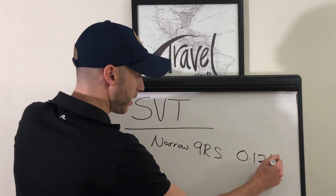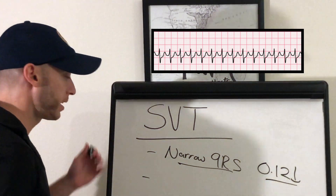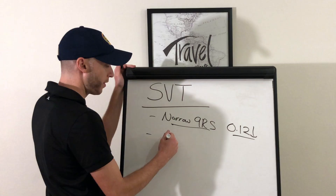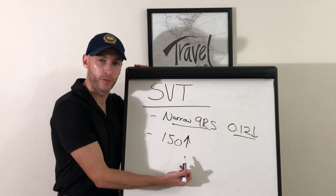The QRS is less than 0.12 — narrow QRS. The rate: I think about the rate as being over 150. In your brain, I want you to think about 100 to 150 as sinus tach. 150 or higher: SVT. Normally SVT, what it looks like in textbooks or out in the field, is going to be 170, 180, 190, 200. So technically it's over 150, but that's your SVT — narrow QRS and over 150.